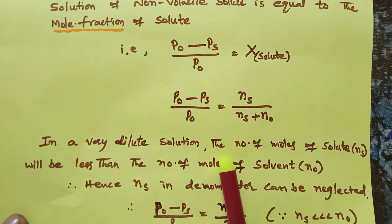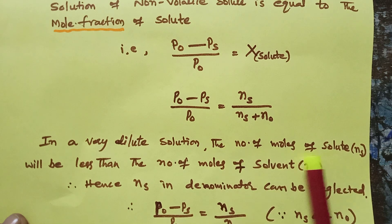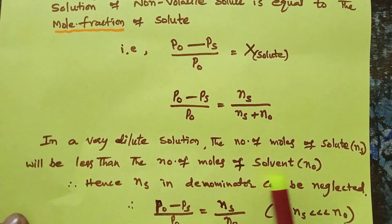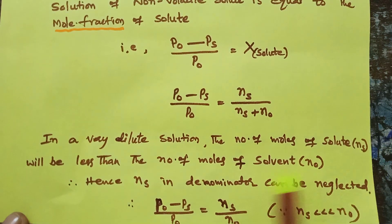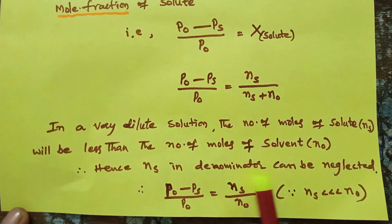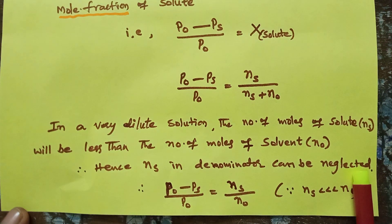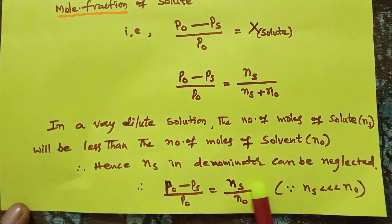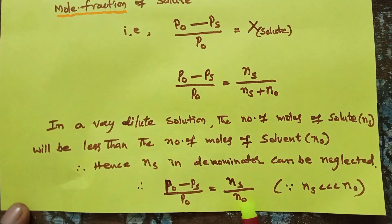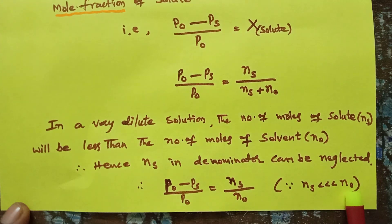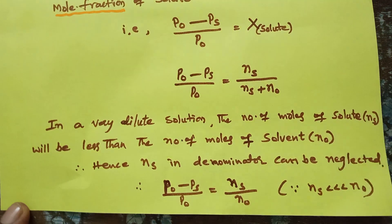In a very dilute solution, the number of moles of solute is much less than the number of moles of solvent. Hence ns in the denominator is neglected. Therefore: (P⁰ − Ps) / P⁰ = ns / n⁰.